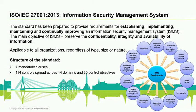A good thing about the standard is that it's applicable for all organizations — independently of type, size, or nature. It's a pretty universal standard. Quickly on the structure: there are seven mandatory clauses which define the framework of the information security management system, and after that we have 114 controls split across 14 domains and 35 control objectives that cover all key aspects of what organizations must implement.